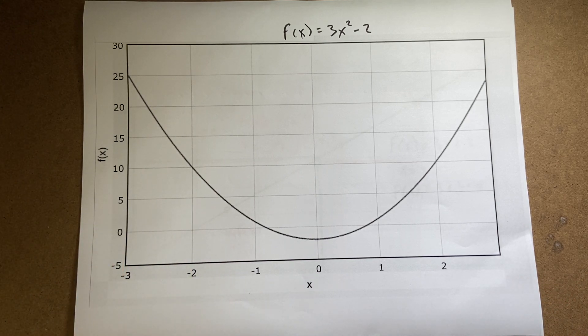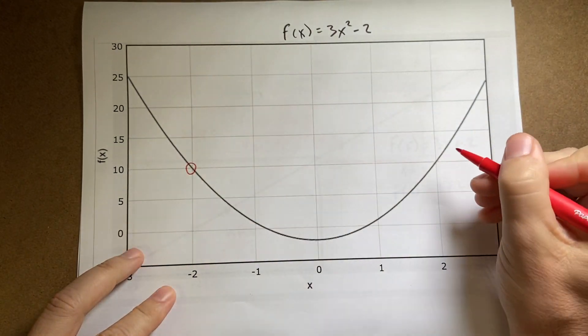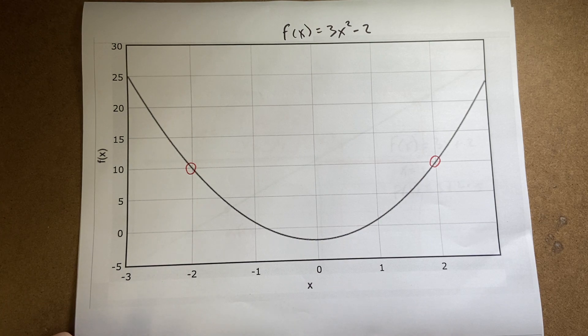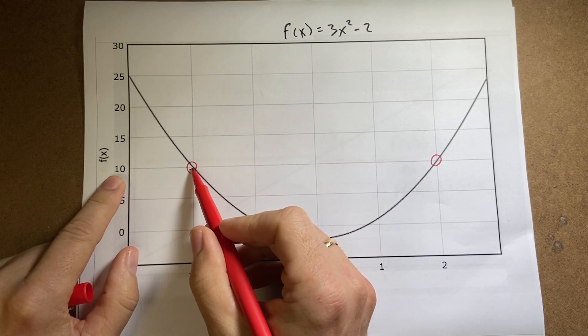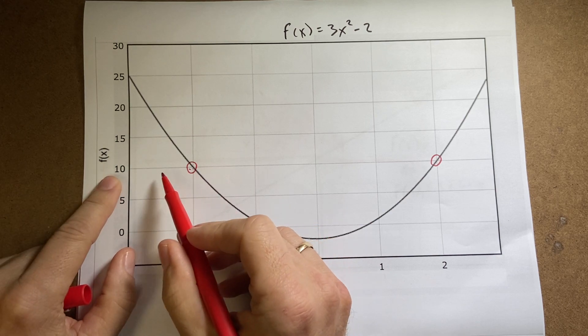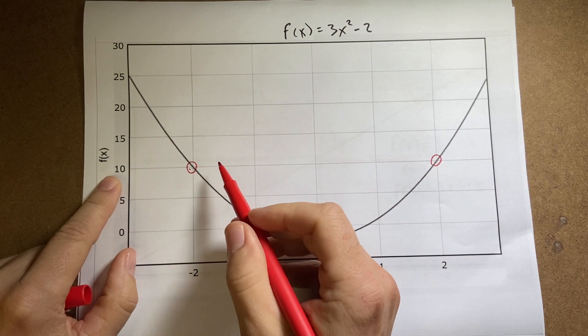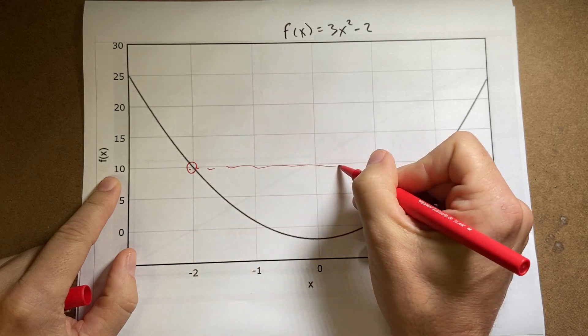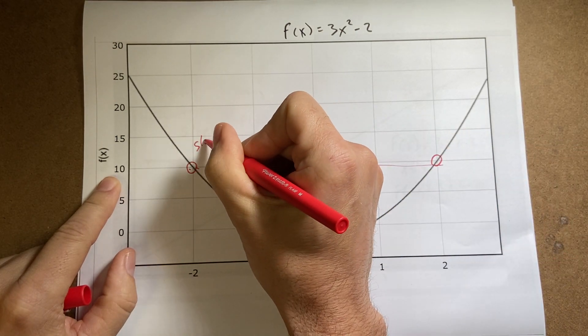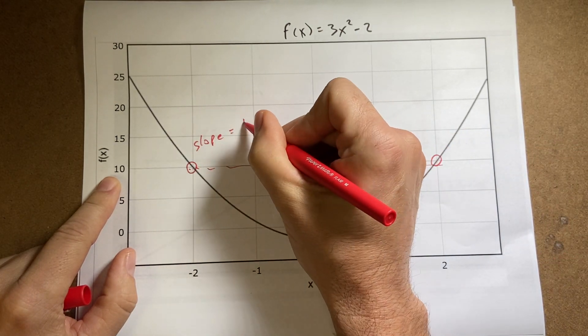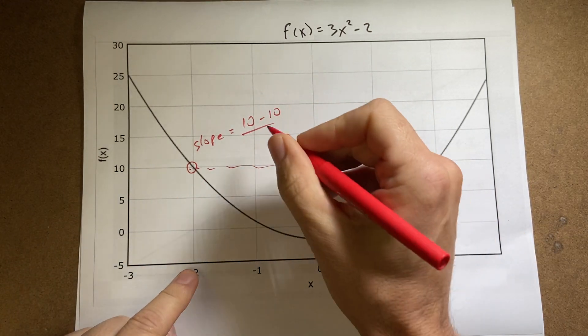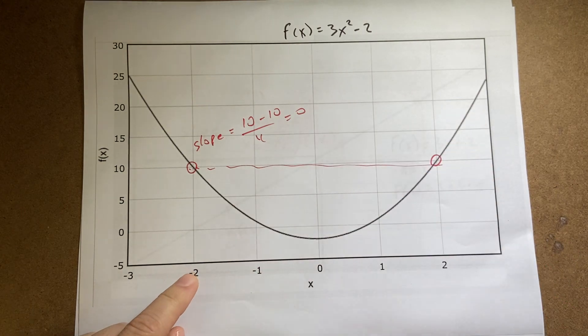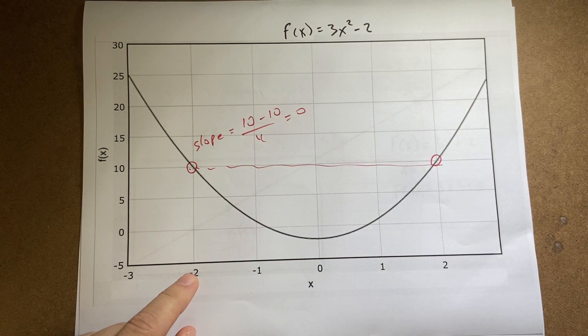Well, let's just pick two points. I'm going to pick this point and this point. If I find they both have a function value of 10. So if I do slope, it's going to be 10 minus 10 divided by the change over 4, 0. So the slope of this is 0. So it's not changing. But it is changing.